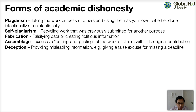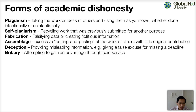Deception is where a student might say they've missed the assignment and their reason might be that their cat died, when in fact their cat is still alive. That's an example of deception. Bribery is where a student might bribe a professor — give them a hundred dollars, for example — in order to get a better grade on a particular course.